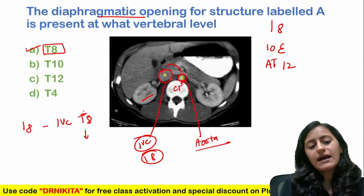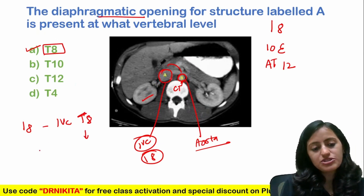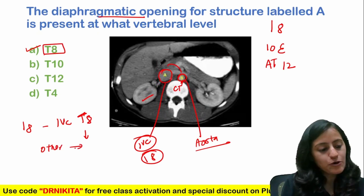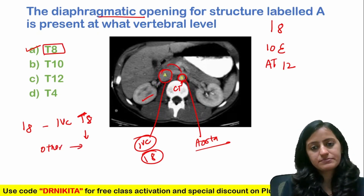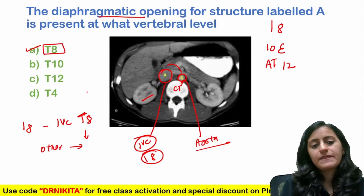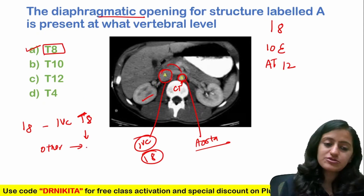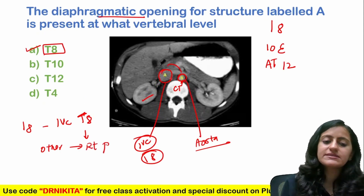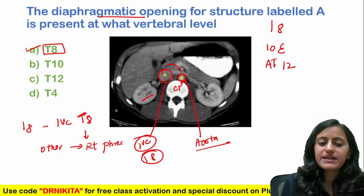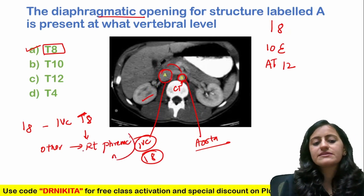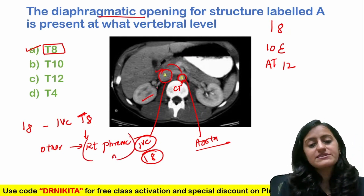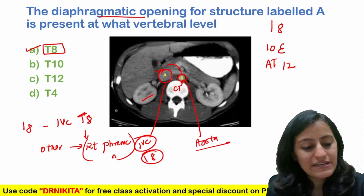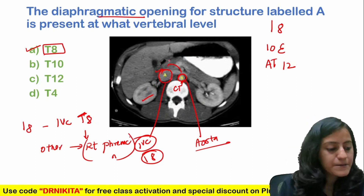What other structure passes through the IVC opening apart from the IVC? Apart from the IVC, what other structure passes through it? It is the right phrenic nerve. Remember, it's the right phrenic nerve, not the left phrenic nerve. IVC is on the right side, so the right phrenic nerve passes along with it.